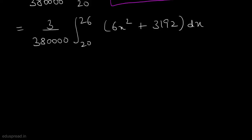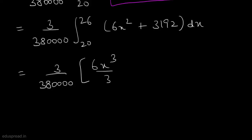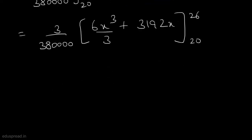Integrating 6x² + 3192 gives 6x³/3 + 3192x, evaluated from x = 20 to x = 26. After substituting the values of x and solving, we get 0.3024. So the probability that both tyres are underfilled is 0.3024.